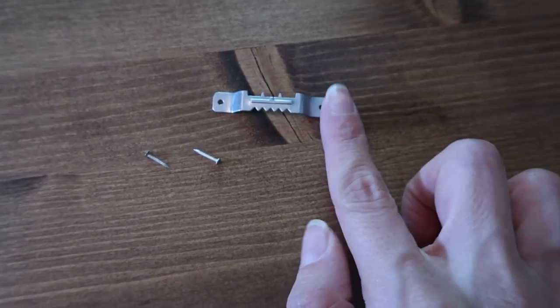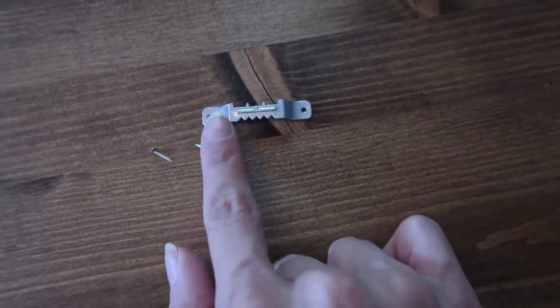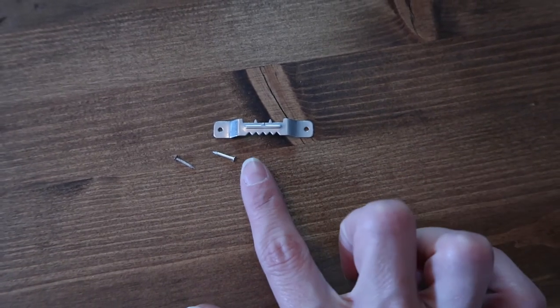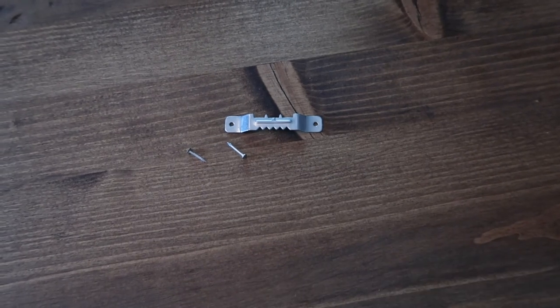Very last step is to get one of these little wall hooks. They make them in different sizes that hold different weights, and you just need to put it on the back of your wood round and use the little nails that it comes with to put those into the two little holes, and you are good to go.